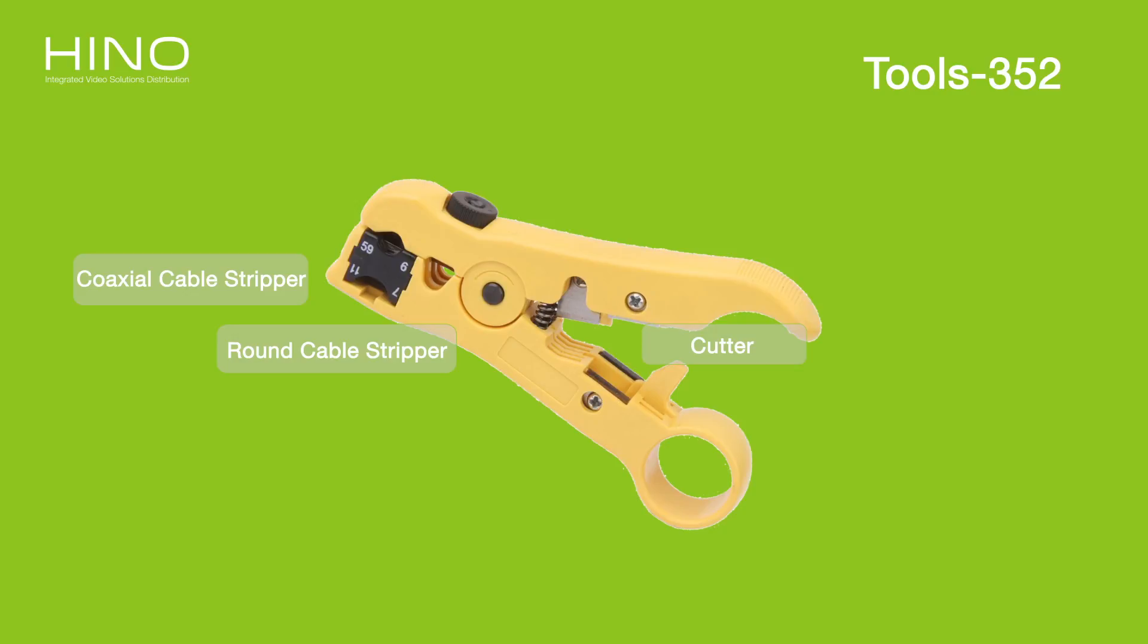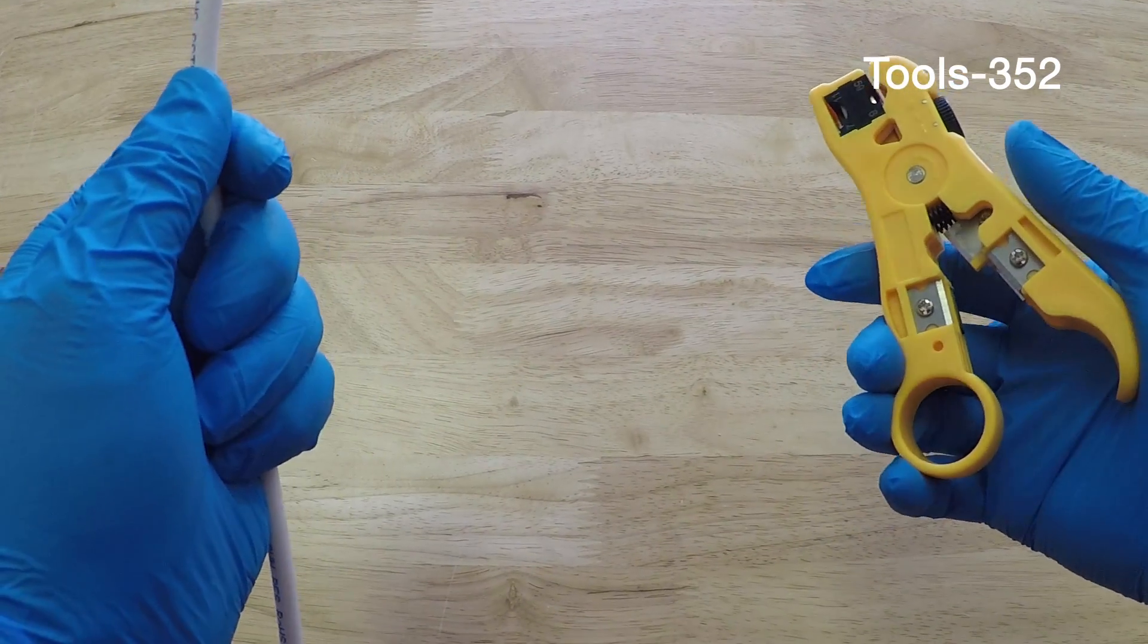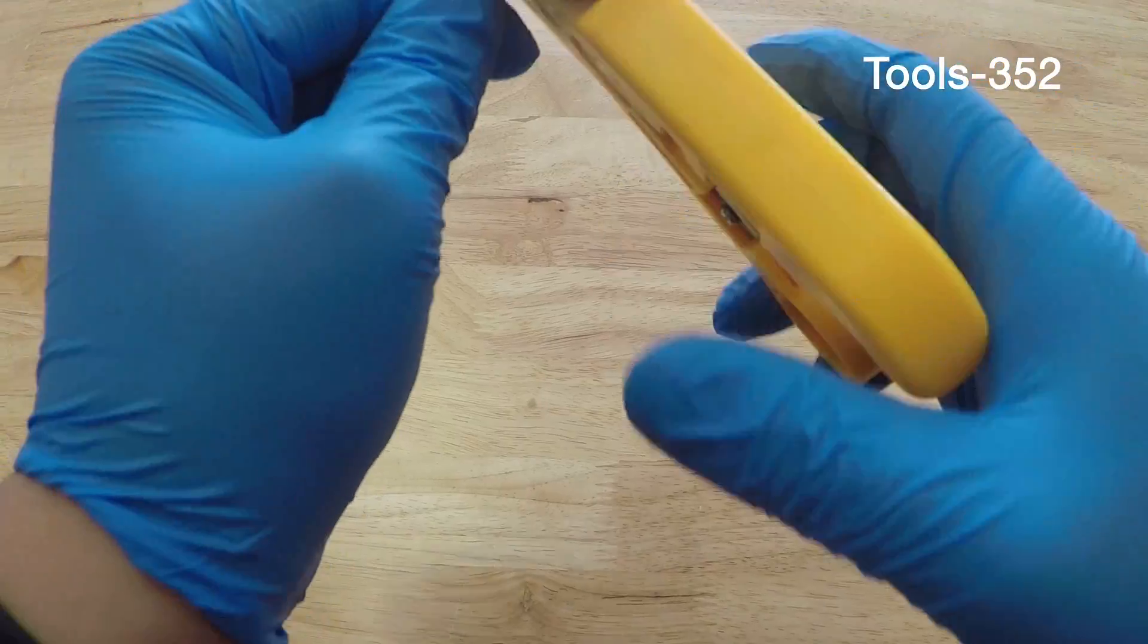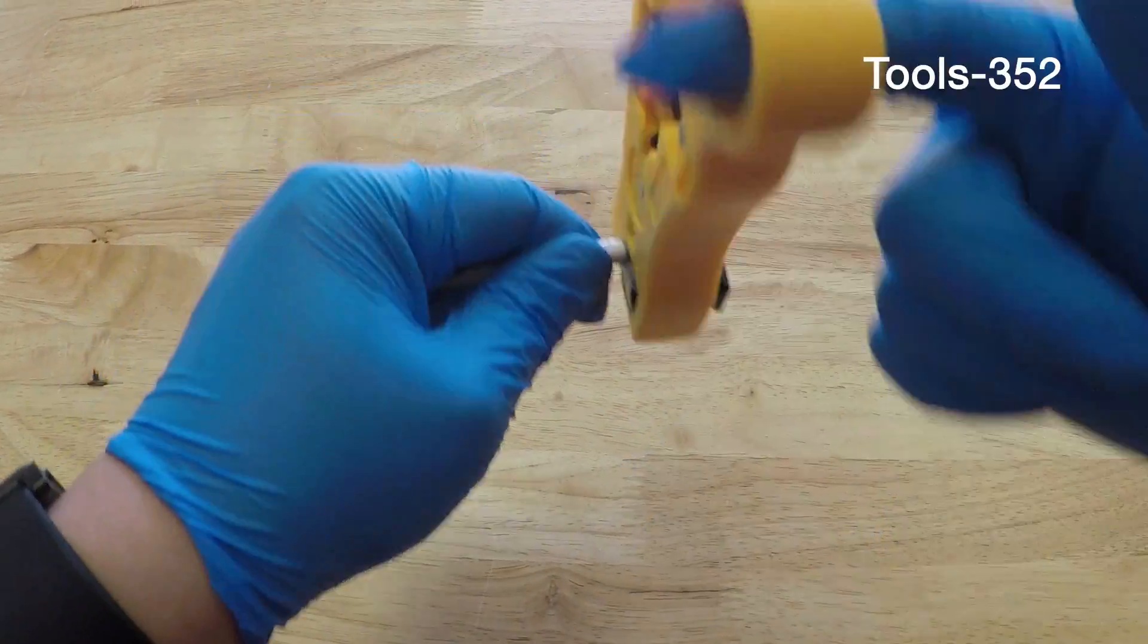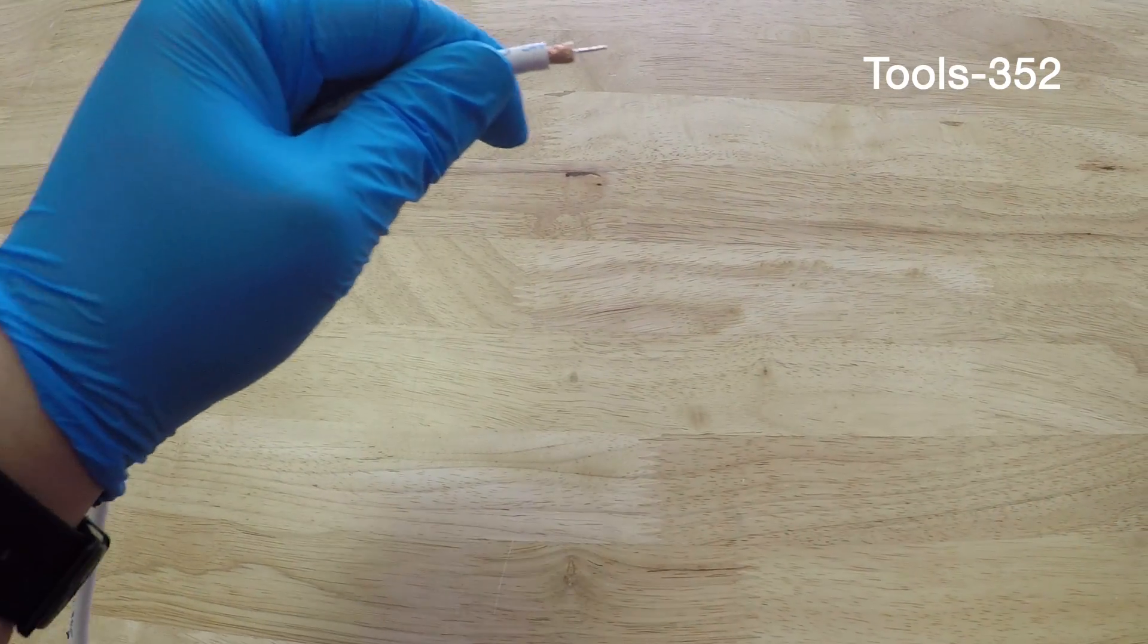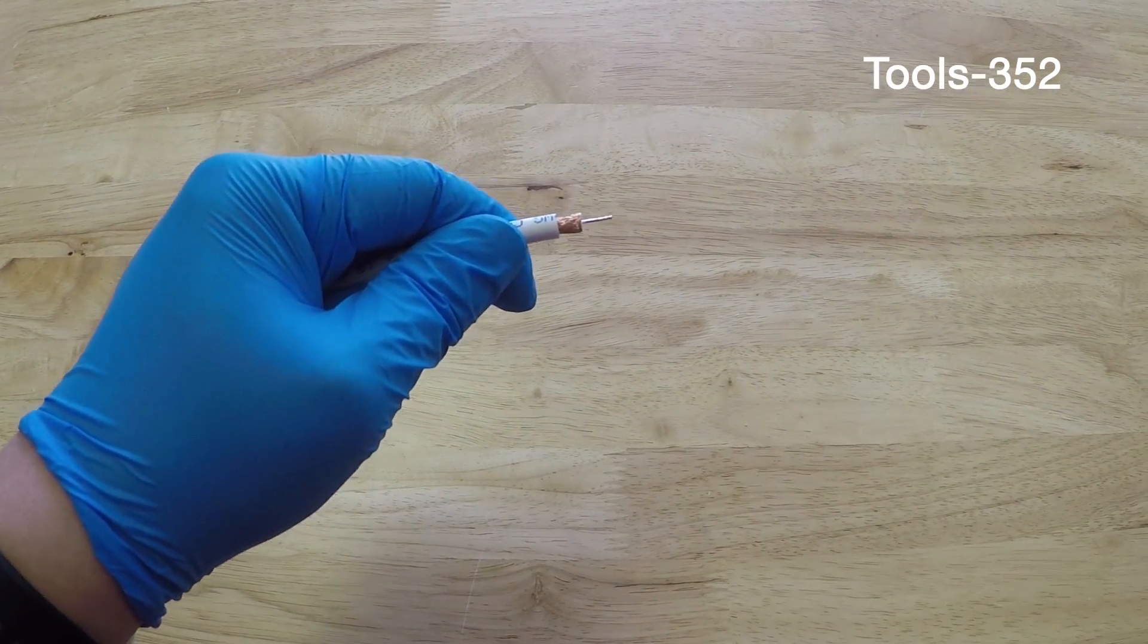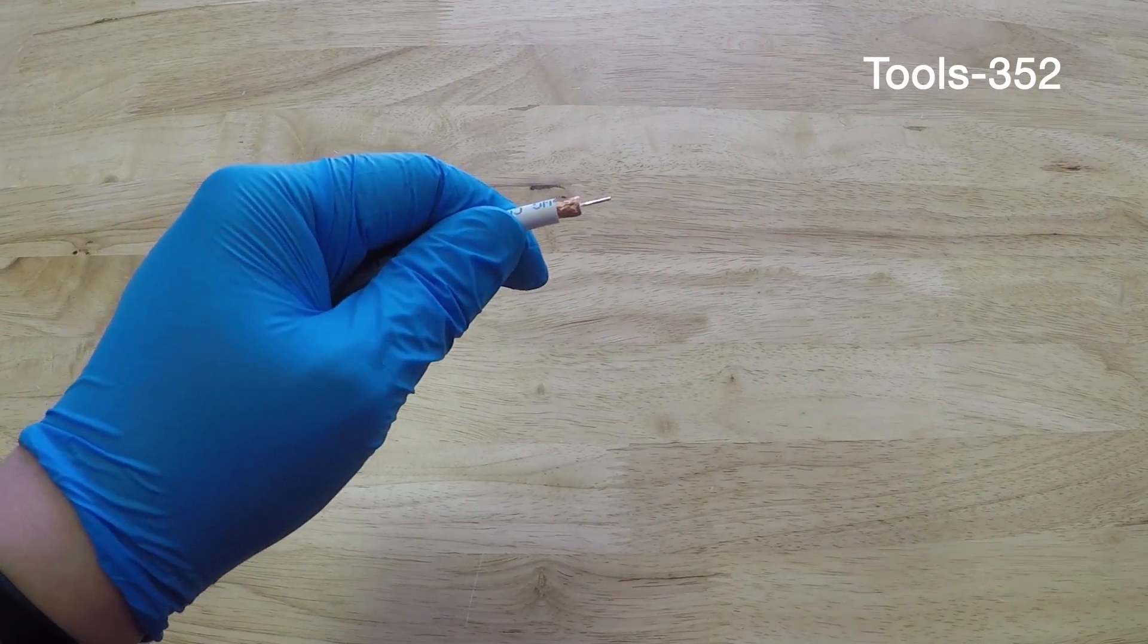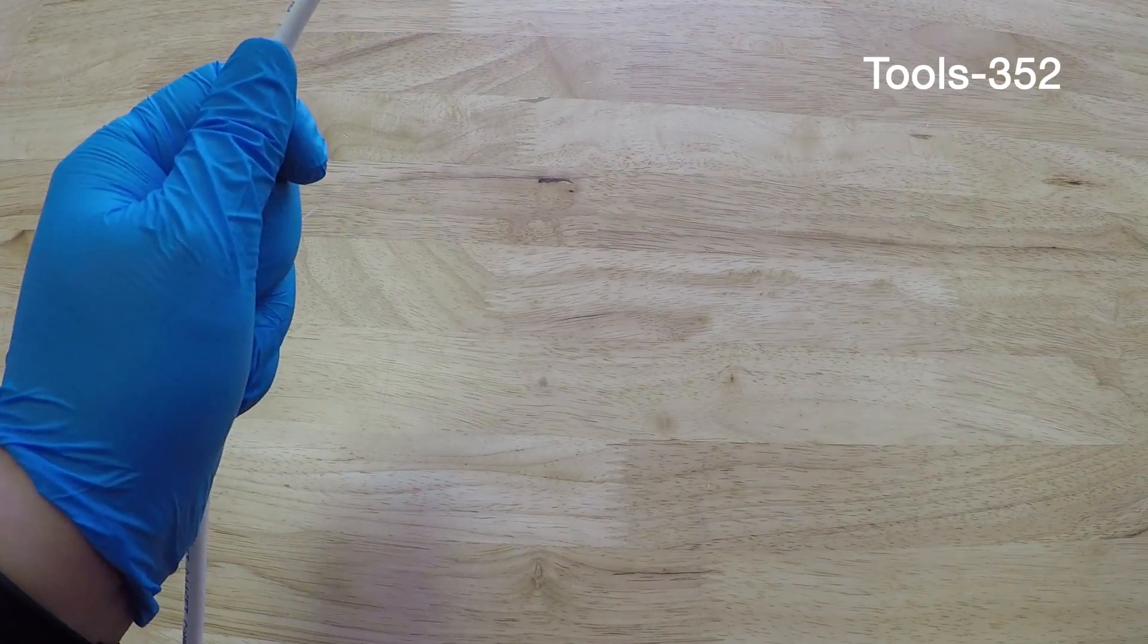To use it, first insert the cable into the opening and then rotate the tool and pull it away, and you will have a stripped RG59 cable.